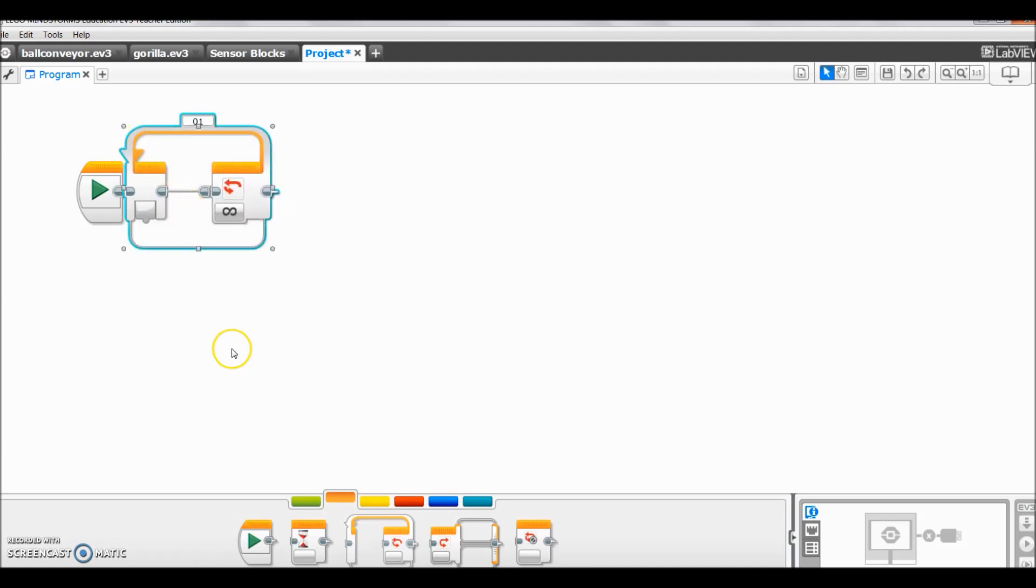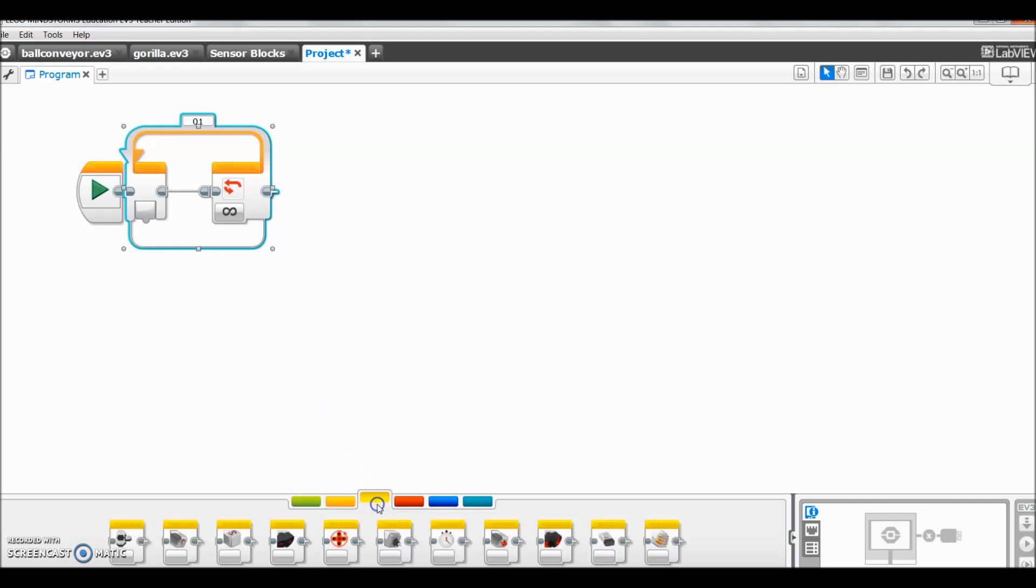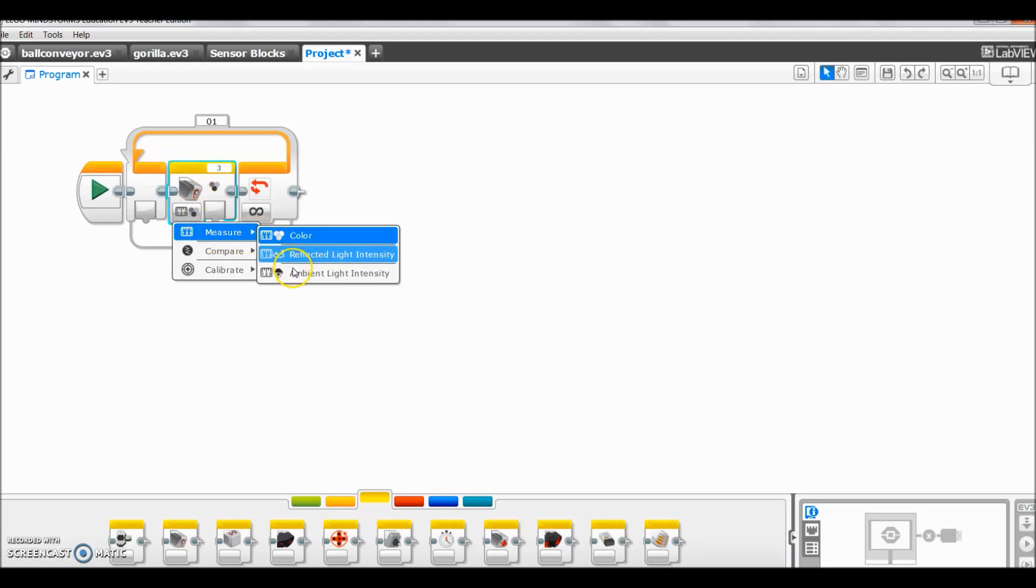Like so. Then we're going to go to your yellow tab here. And we're going to bring up a color sensor block. We are going to put it on for measure. And we want ambient light intensity. And I'll show you what that is in a second.